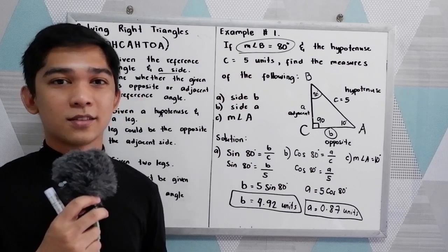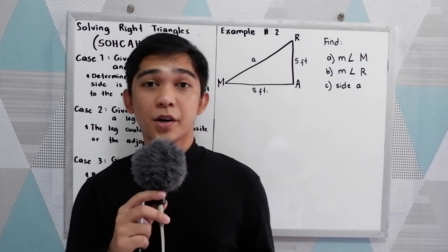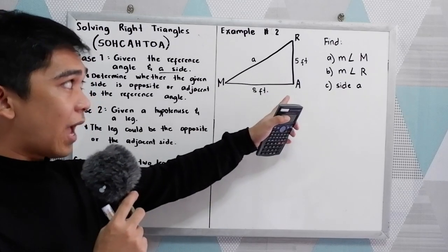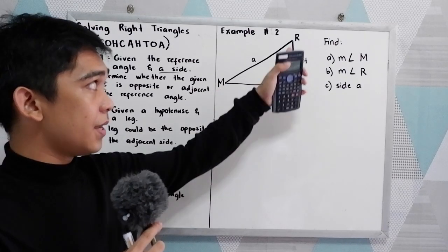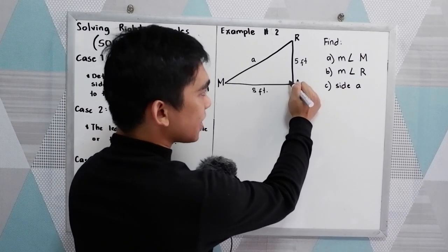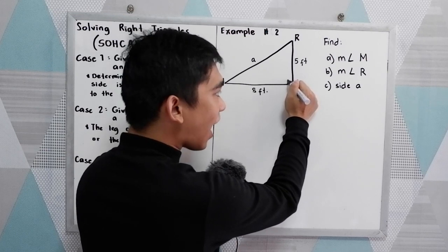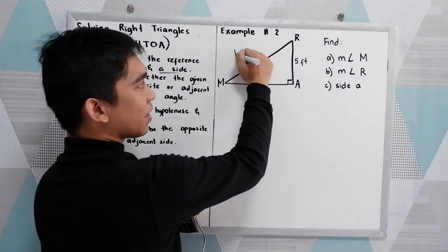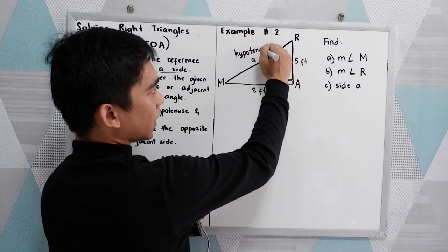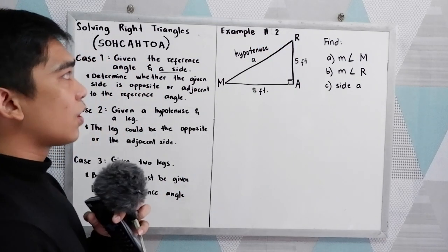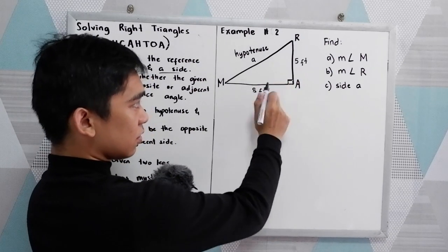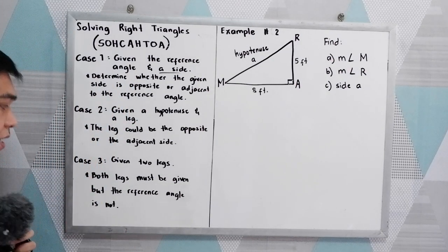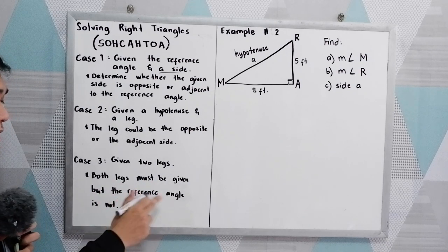Now let's have our example number 2. In this example, we have the given illustration — triangle MAR. Angle A here is our right angle, so that is 90 degrees, and opposite to it is our hypotenuse. In this case, we have two given legs, so that means we don't have our reference angle. That will fall under our case number 3: both legs must be given but the reference angle is not.